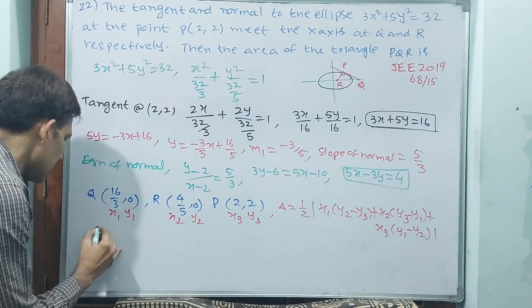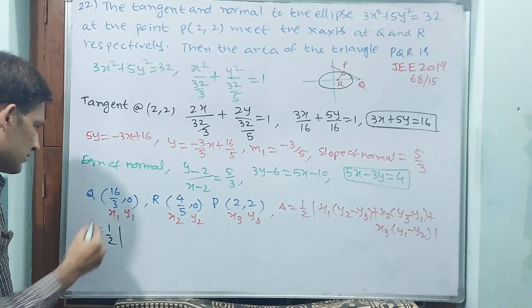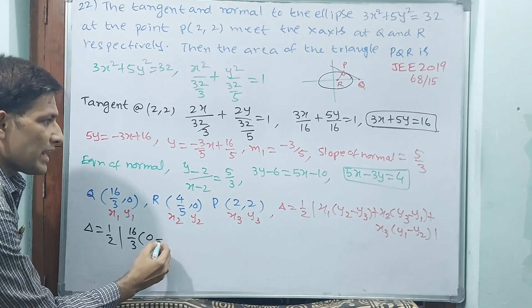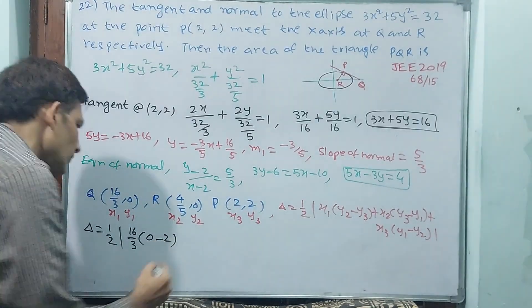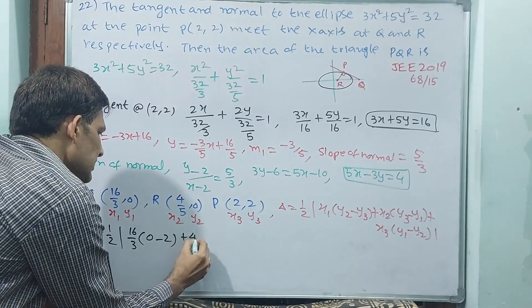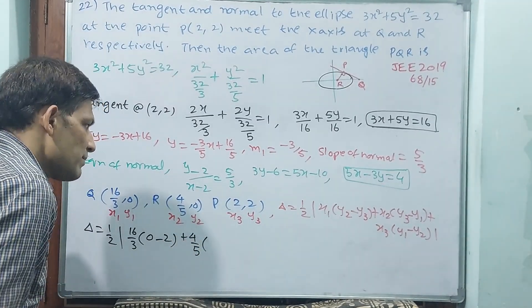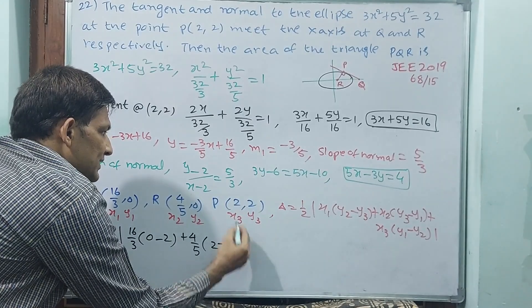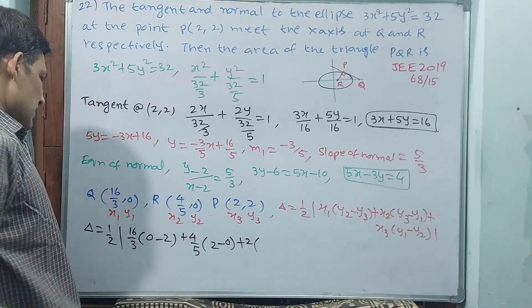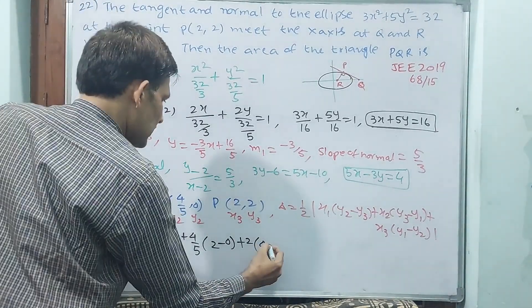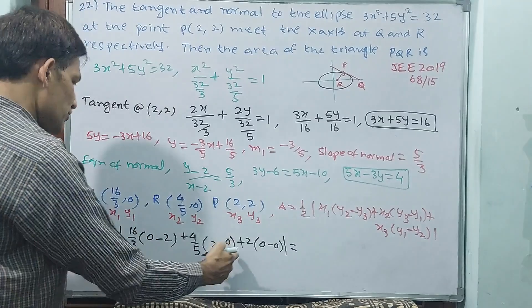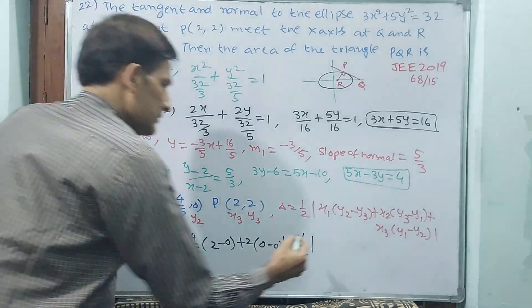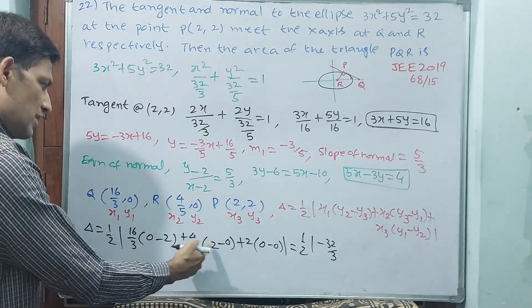Delta is equal to half modulus. x1, x1 will be 16/3 into y2 is 0 minus y3 is 2, plus x2 will be 4/5, y3 minus y1, y3 is 2 minus y1 is 0, then plus x3 will be 2, y1 will be 0 minus y2 also 0. That means last term is 0, this is 0, this is 0, y2 is 0. Half of modulus, see minus 32/3, 8/5.